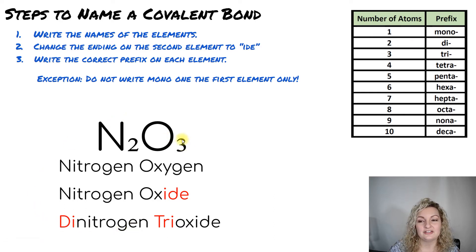And then we have three oxygen and three is tri. So we're going to write the tri in front of the oxide now. So it reads dinitrogen trioxide. And that is your final answer for that one.